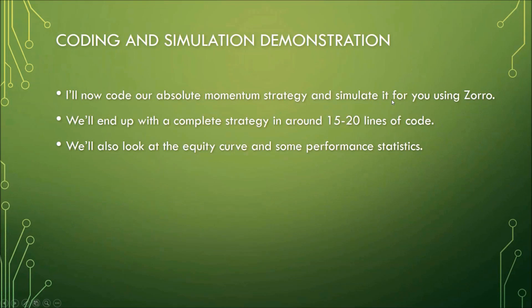I'm going to switch over to a Zorro environment now and code this strategy. We'll end up with a complete strategy in around 15 to 20 lines of code, and also have a look at the equity curve and some performance statistics.